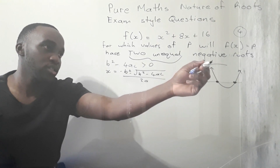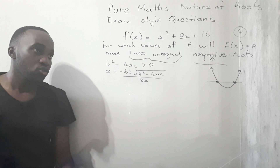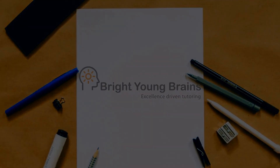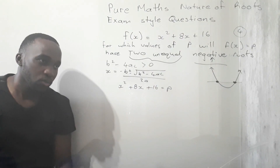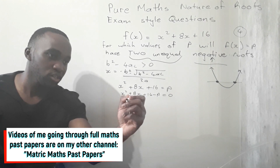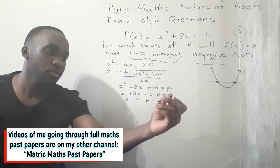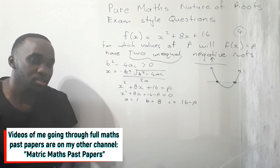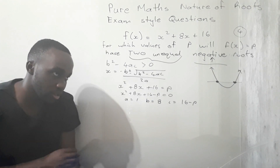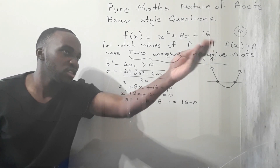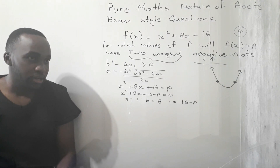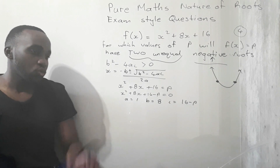So we need to lay out this equation in standard form. In this expression, a is 1, b is 8, and c is 16 minus p — anything without x or x² is your value for c. For this question, just looking at how it's laid out, it may not be easy to anticipate where the roots will be.